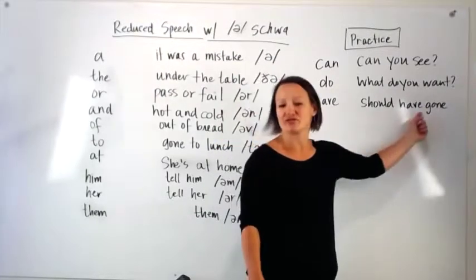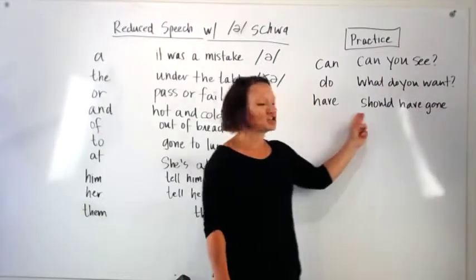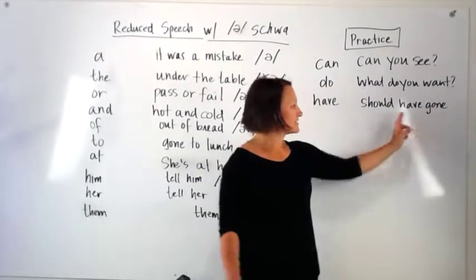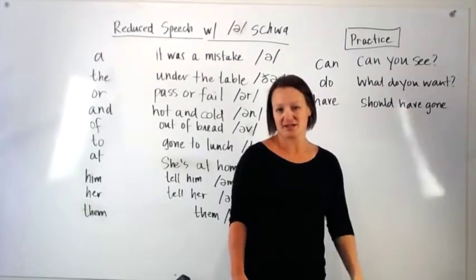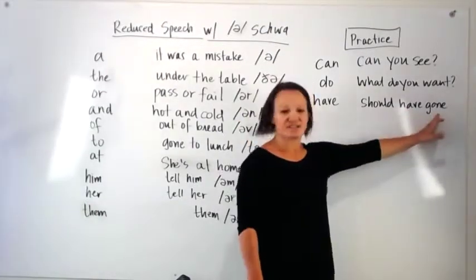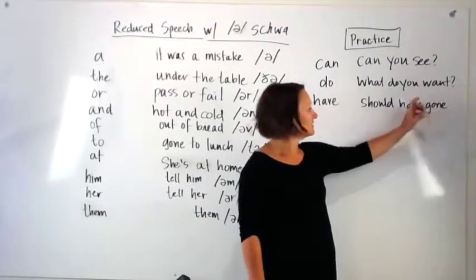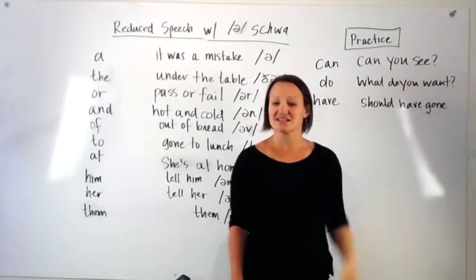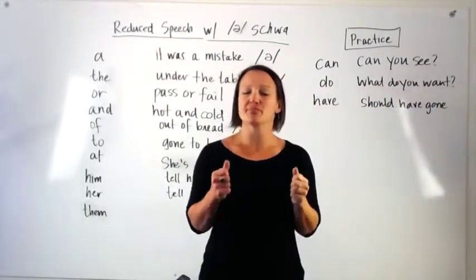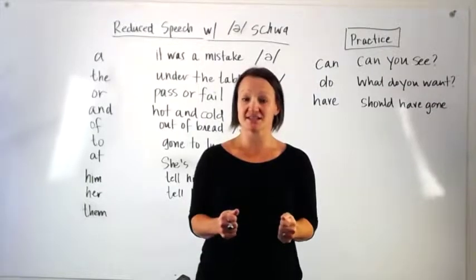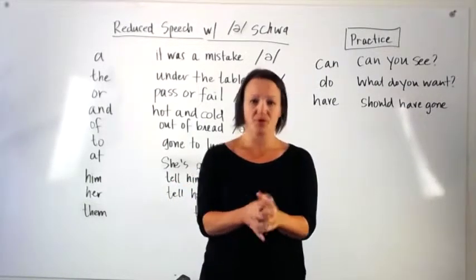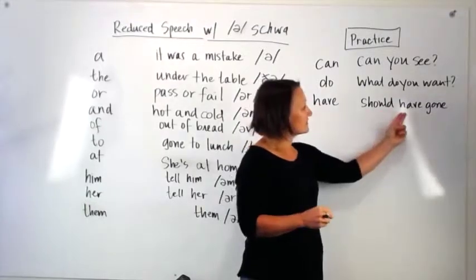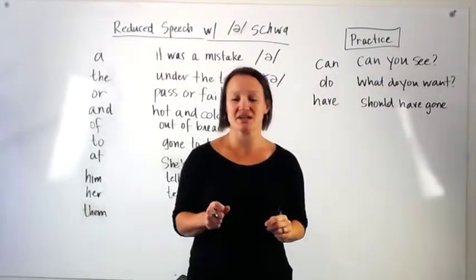Have. Should have gone. This sounds like if. Should have. I should have gone. Again, the words that are important like gone, want, and see, those are the key words. The important words in the sentences or in the questions. And so we don't shorten those at all. But we do shorten some of the other function words that don't carry a lot of meaning.